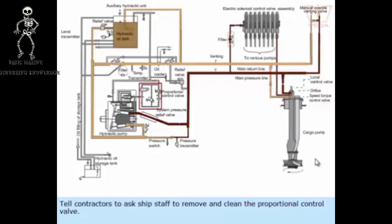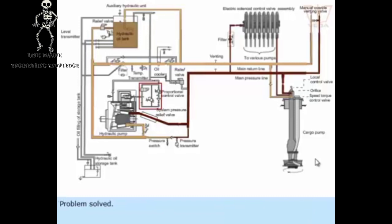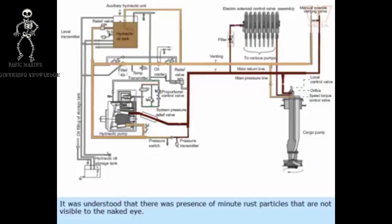Tell contractors to ask ship staff to remove and clean the proportional control valve. Problem solved. It was understood that there was presence of minute rust particles that are not visible to the naked eye.